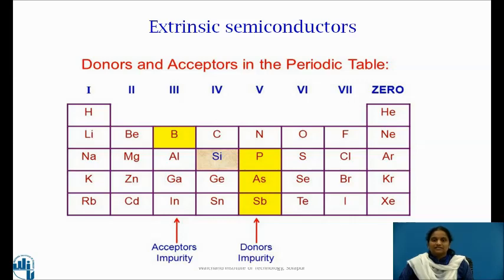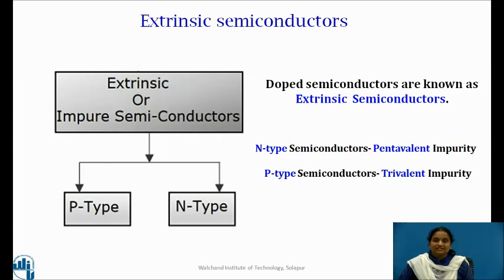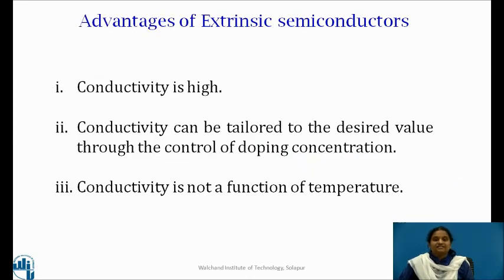Thus, they are the substitutional impurities and do not cause any distortion in the original crystal structure. Doping can either increase the number of free electrons or holes in the semiconductor. Because of this, extrinsic semiconductors have two types: n-type and p-type semiconductors. The advantages of extrinsic semiconductors include: the conductivity is high, the conductivity can be tailored to the desired value through the control of doping concentration, and here the conductivity is not a function of temperature.